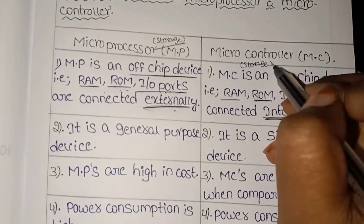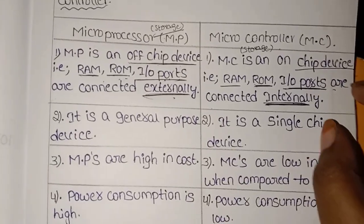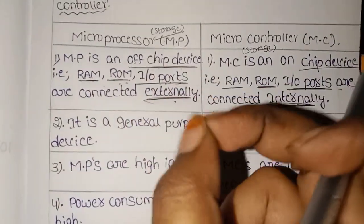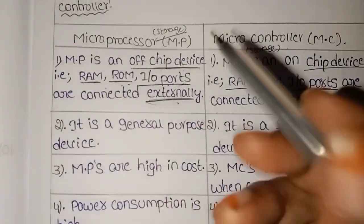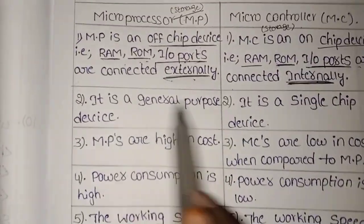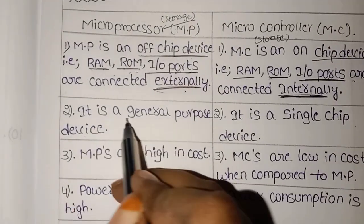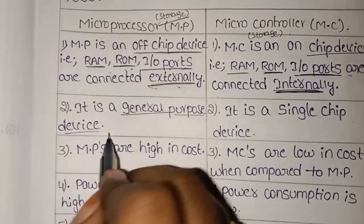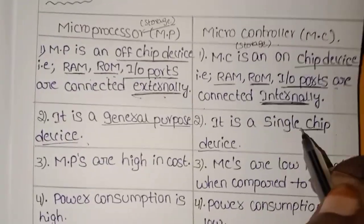If you don't have any external devices connected, it will be necessary to provide storage. This is the microcontroller. With a microprocessor, you need to connect external devices to store data because it does not have internal storage capacity. The microprocessor is a general purpose device, while the microcontroller is a single chip device. All storage is stored on a single chip.